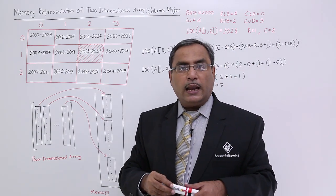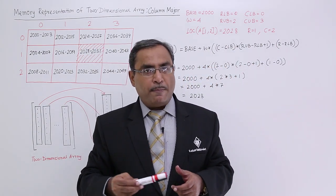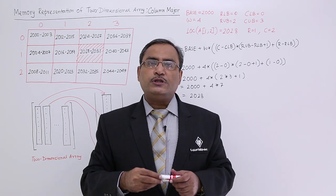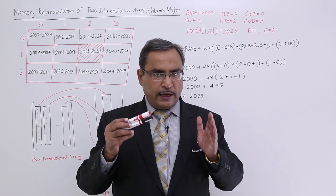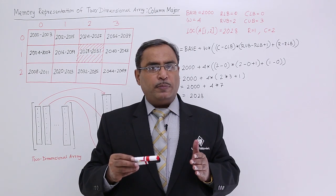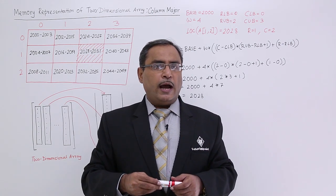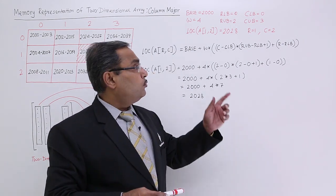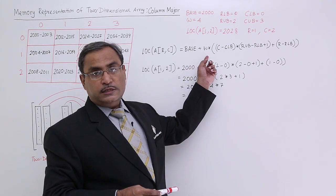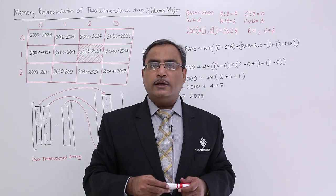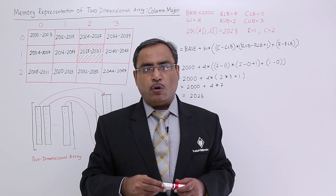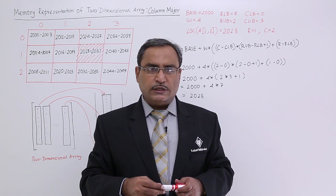This is known as column major order mapping of two-dimensional array onto the computer's memory. I think you are getting the logic. If numerical problems come on this particular domain, I think you should easily answer that one because this is the formula. You should have to remember this one. Otherwise, you can easily deduce the formula in the exam hall also. Thanks for watching this video.